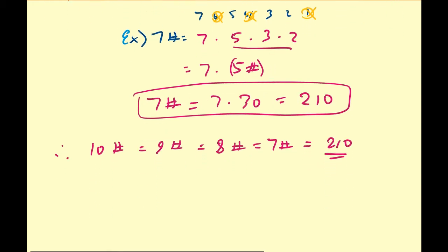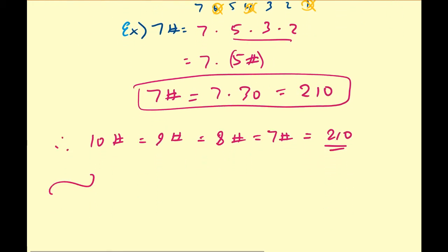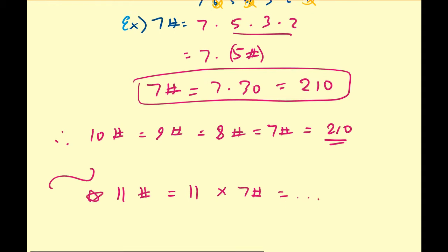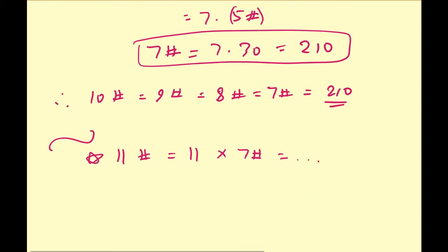But if we go up one more — for example, 11 primorial — since 11 is prime, 11 primorial equals 11 times 7 primorial, which equals 11 times 210. So these are some basic primorial calculations.